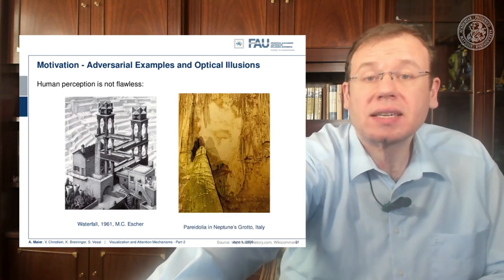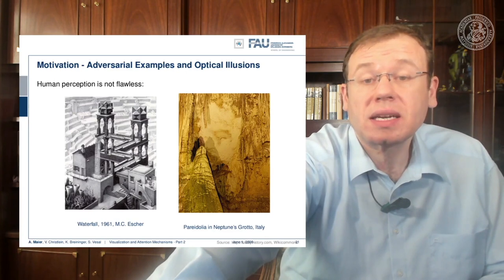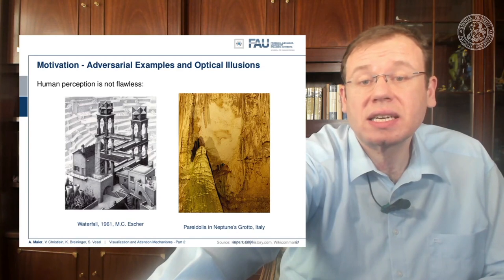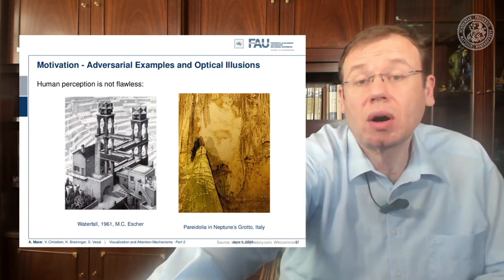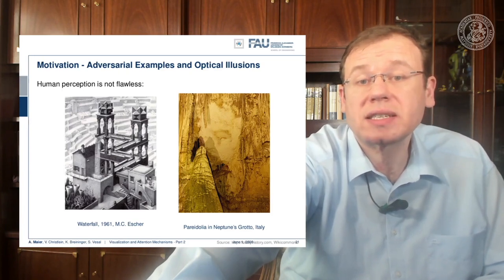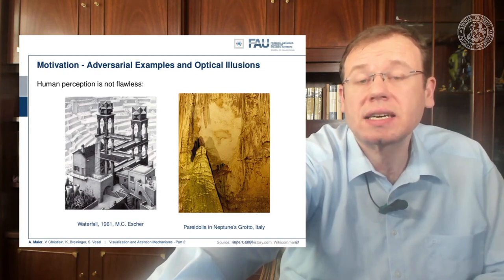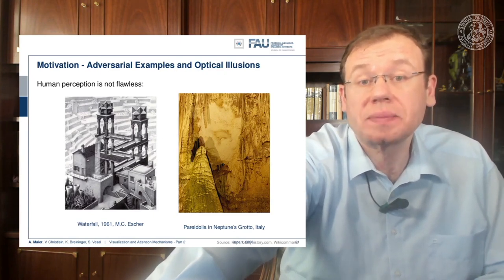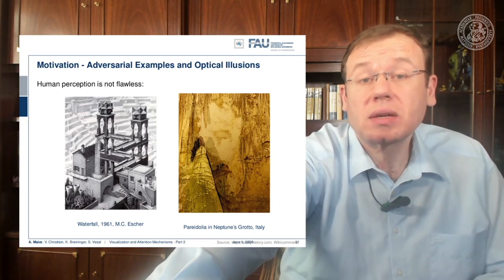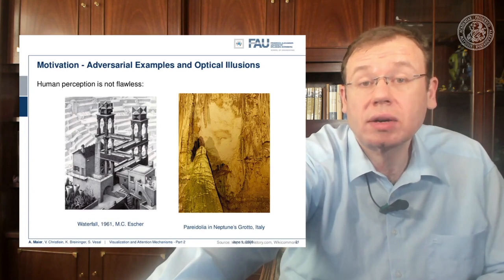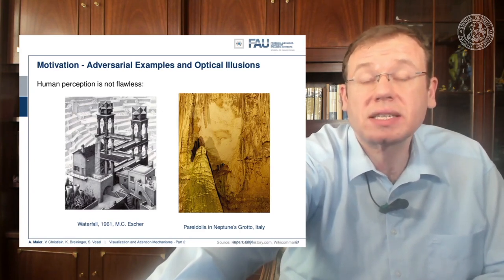A slightly better example for an adversarial example is the image on the right — Neptune's Grotto in Italy. People call the shadow created by the stone formations 'the organ player.' If you look closely at the shadow, it looks like there is a person sitting and playing the stone formation like an organ player would do. Optical illusions also exist in human beings, and adversarial examples are essentially the equivalent in deep neural networks.